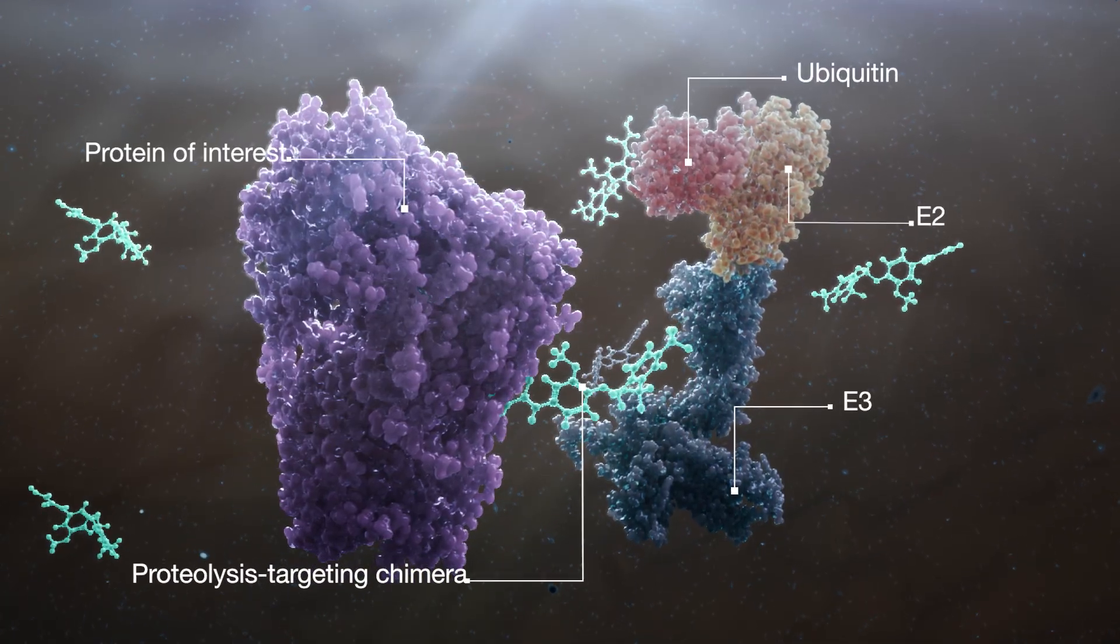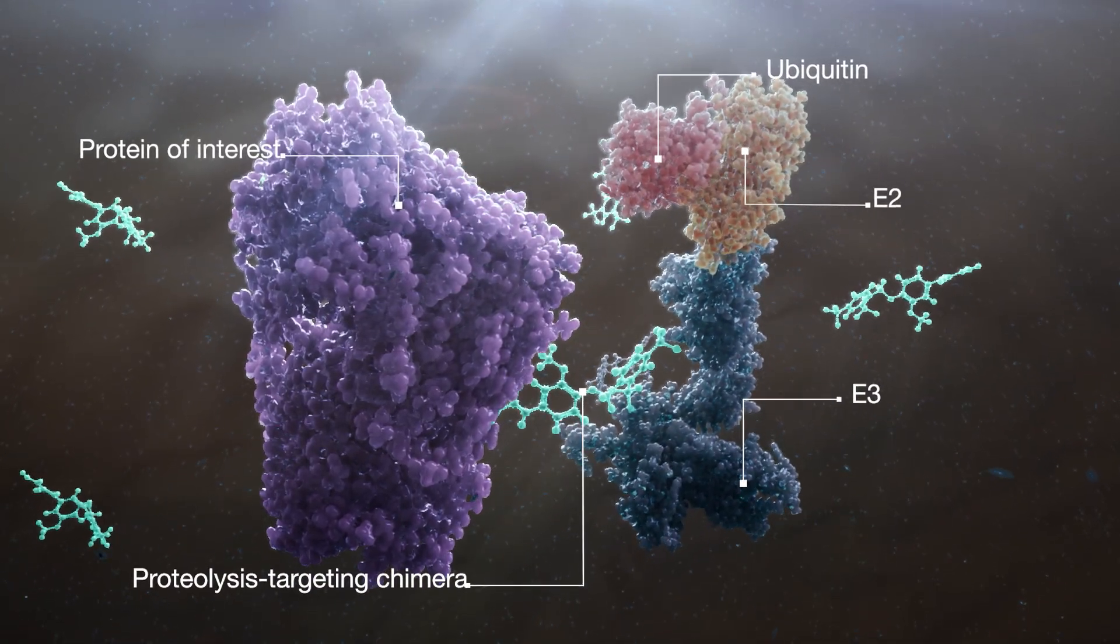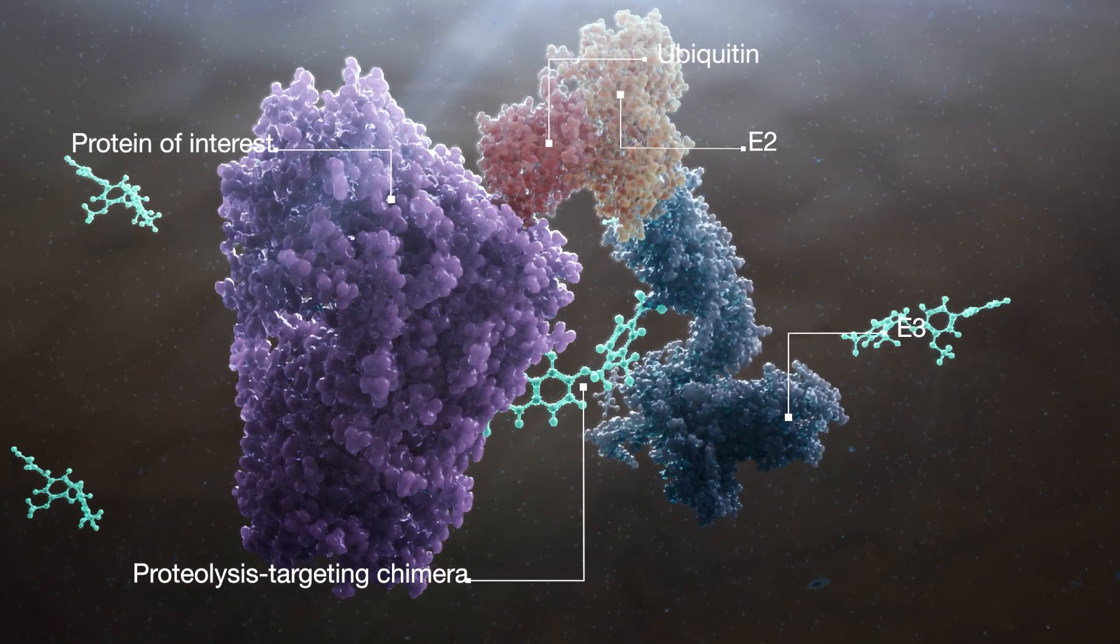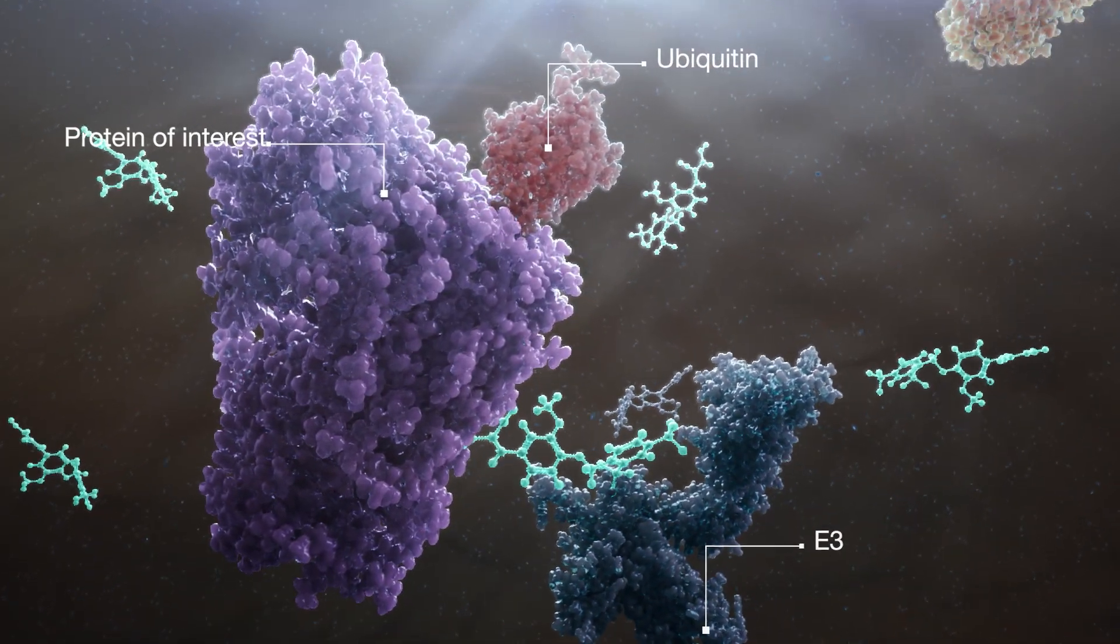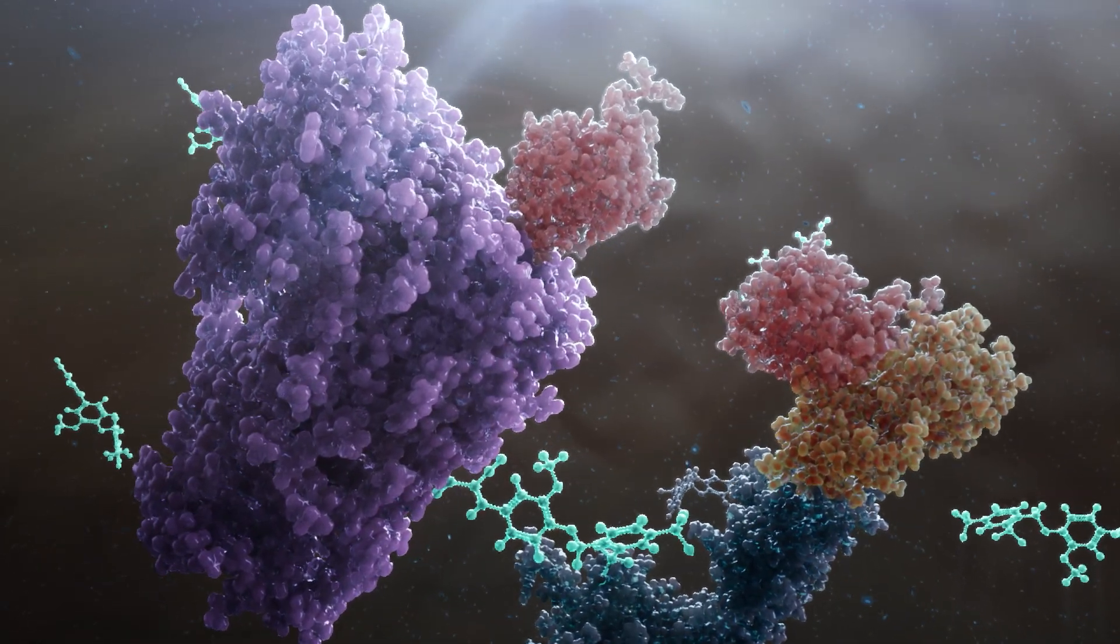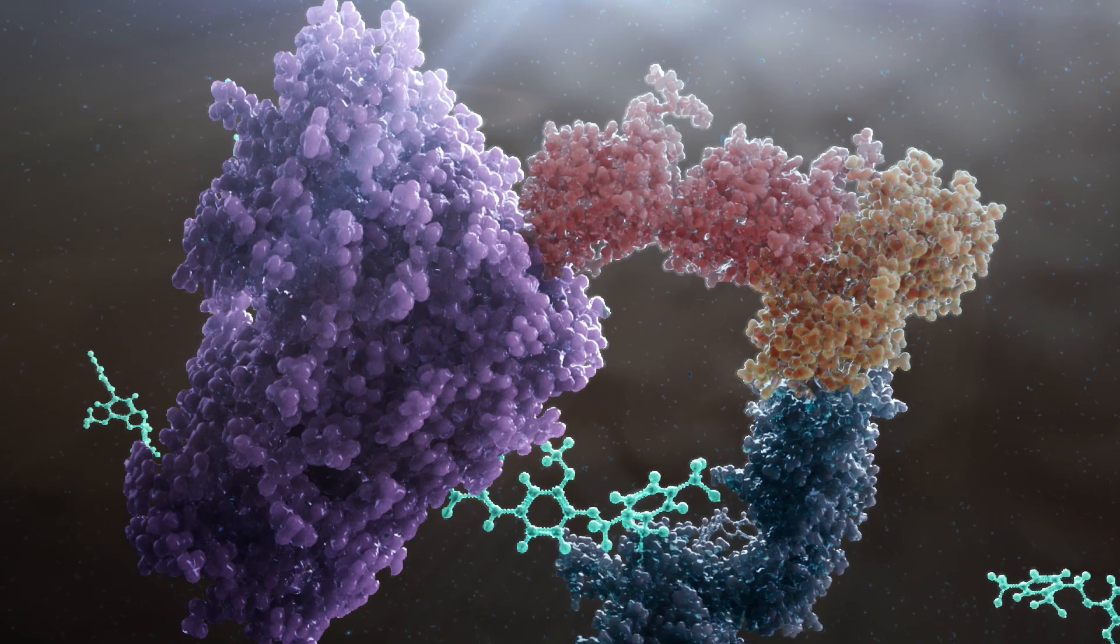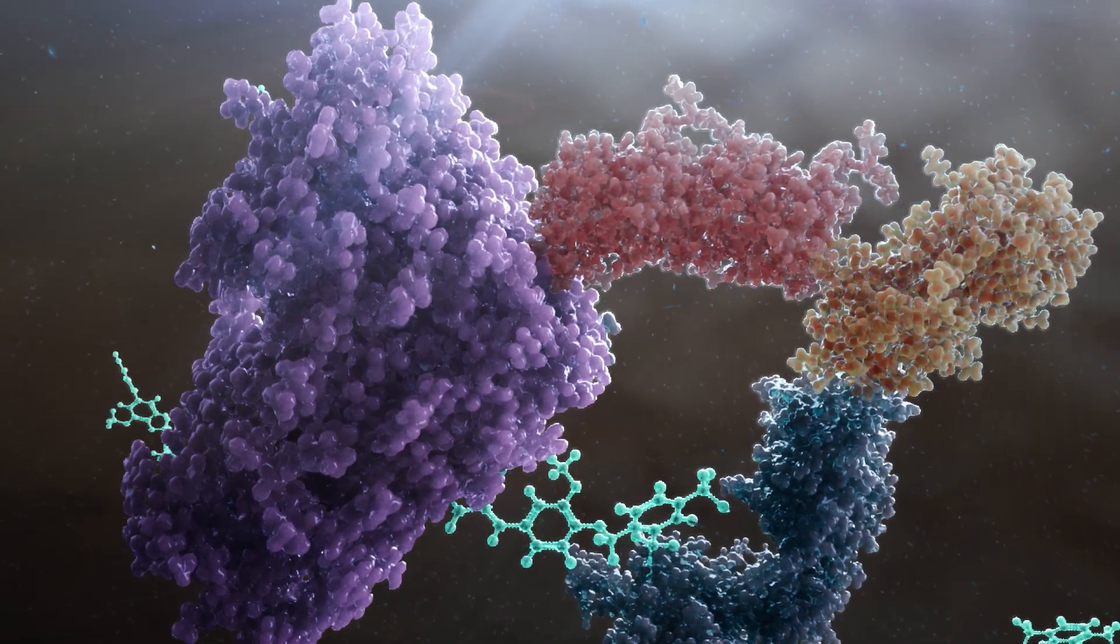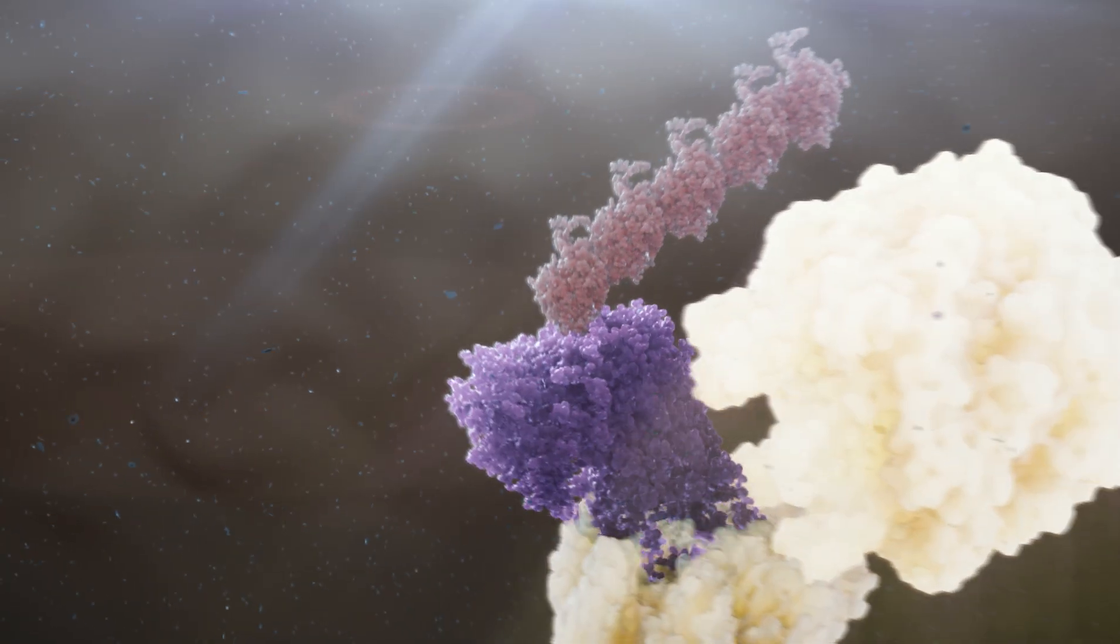A proteolysis-targeting chimera can bind to both a protein of interest and a specific ubiquitin ligase, often E3 ligase, and bring them into close proximity. Successful complexation leads to ubiquitination and subsequent degradation of the protein.